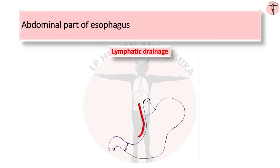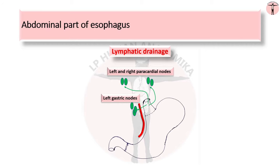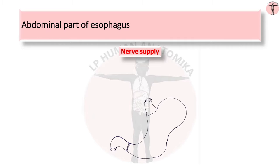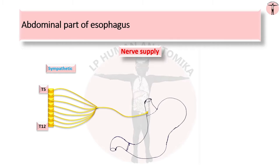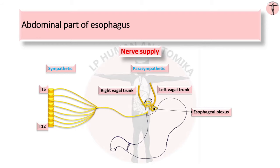The lymphatic drainage of the abdominal esophagus drains into the left gastric and to the left and right paracardial nodes. Lymph from the posterior surface drains directly to the uppermost para-aortic nodes. The sympathetic supply comes from the 5th to 12th thoracic spinal nerves, while the parasympathetic source is the esophageal plexus formed by the right and left vagal trunks.